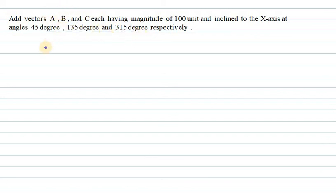For this, we need to find the x-component as well as the y-component. For finding the x-component, we always take the cos of the angle with respect to the x-axis. When we talk about the y-component, we need to take the sine of the angle.